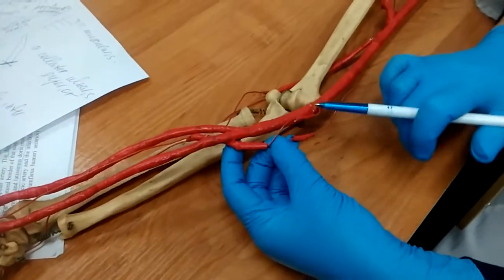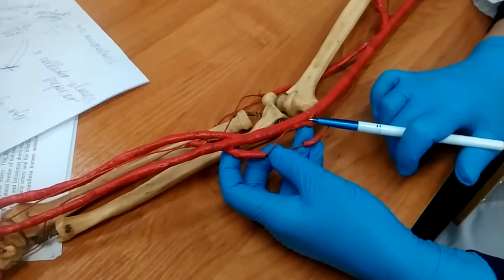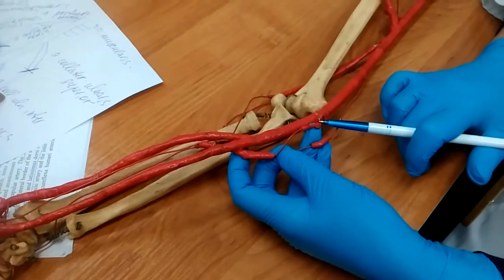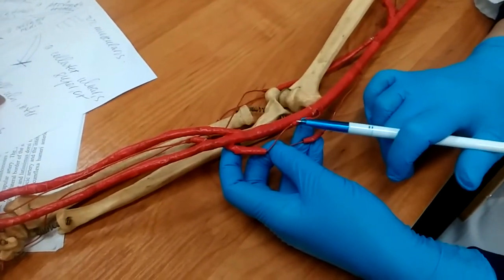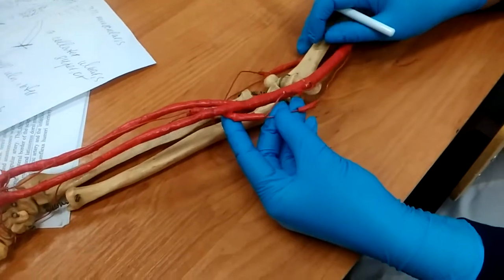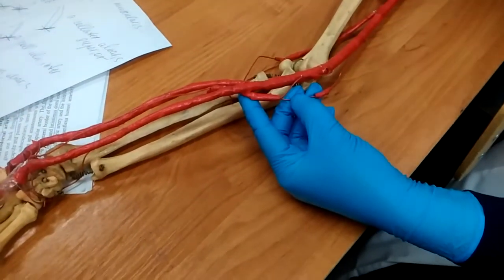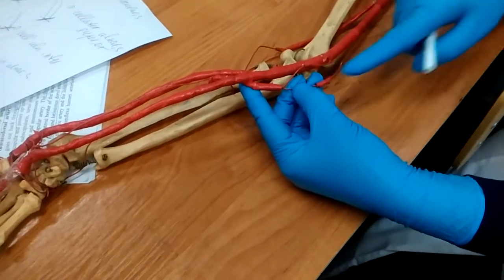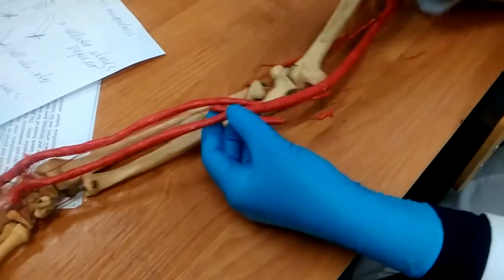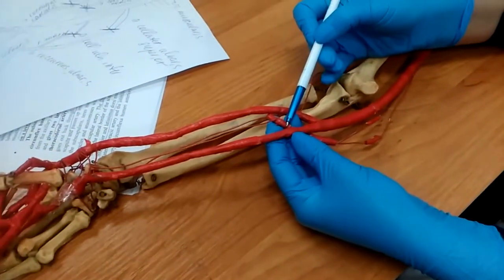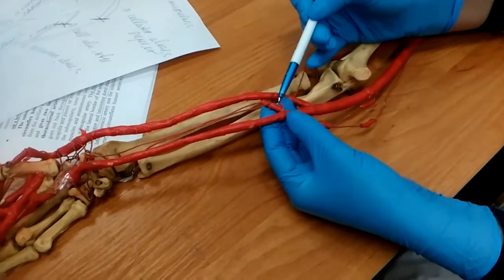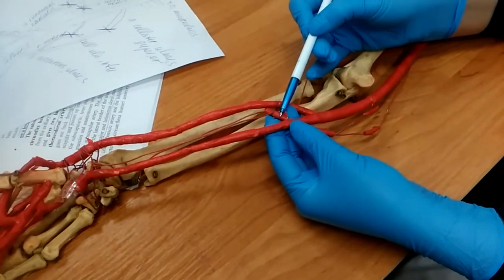The anterior ramos anastomoses with the arteria collateralis ulnaris inferior, and the posterior ramos anastomoses with the arteria collateralis ulnaris superior. Understand? Then the arteria ulnaris has the arteria interossia communis.